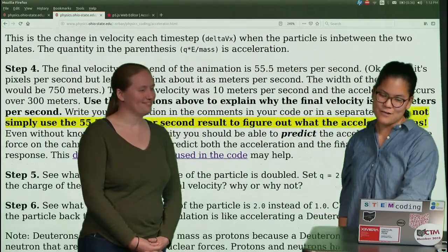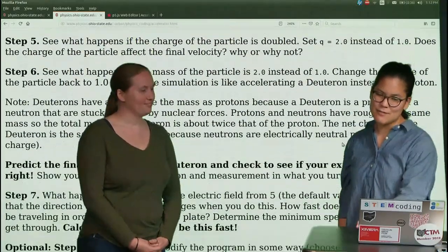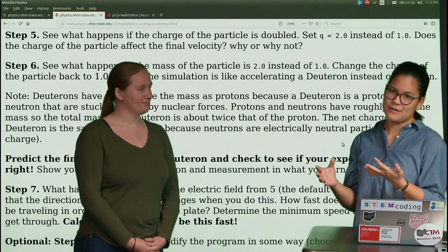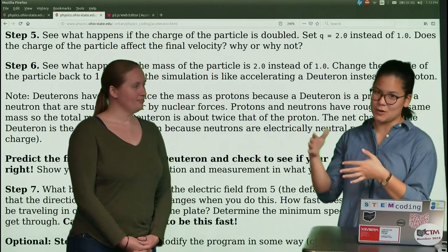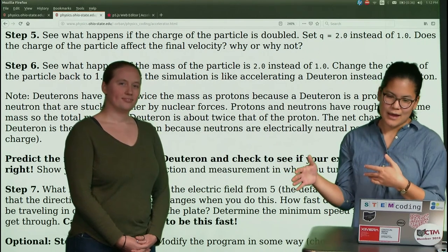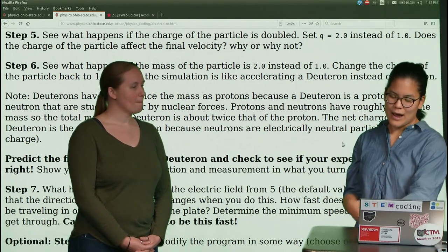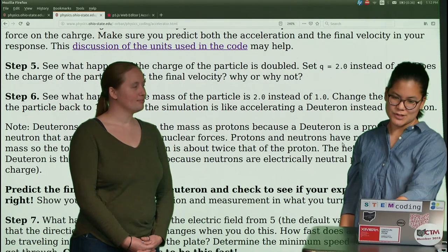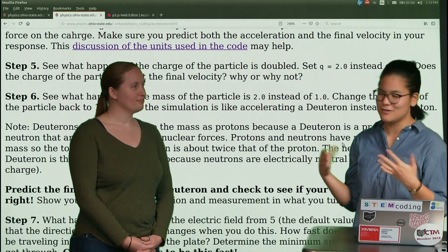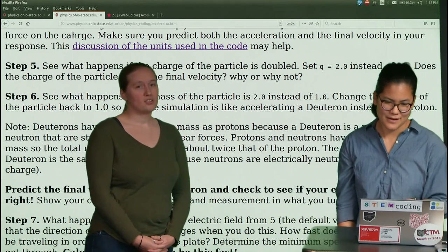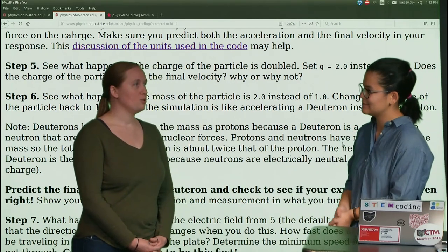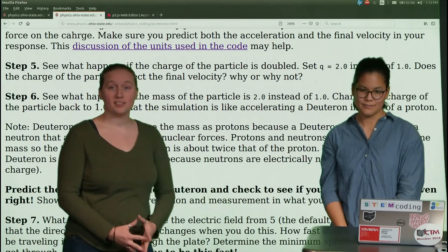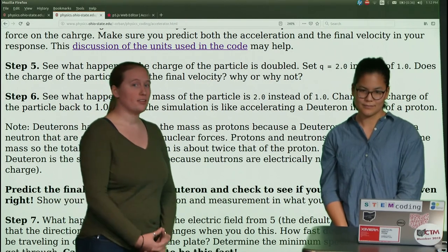Okay, so we've gone through some of the predictions we can make with our model of how an electric field accelerates a charged particle. And now we're going to see how our predictions change with some other modifications to physical parameters of our system. So we'll be exploring what happens if you double the mass or double the charge of your particle that is being accelerated and see how this affects the final velocity.